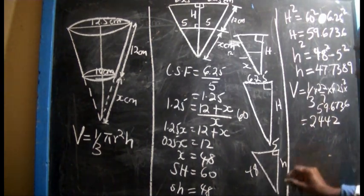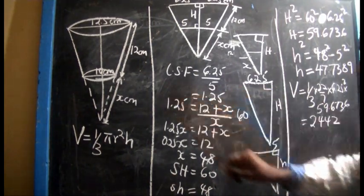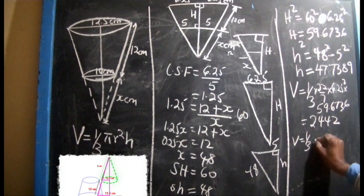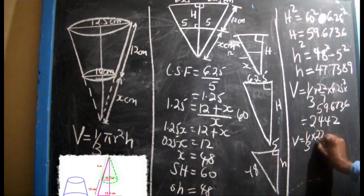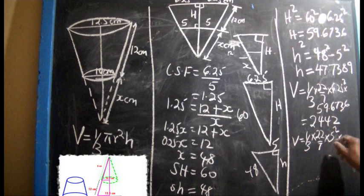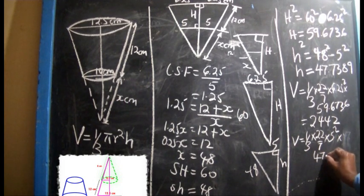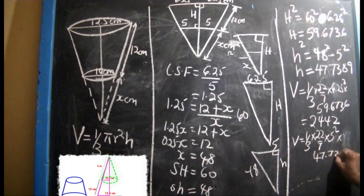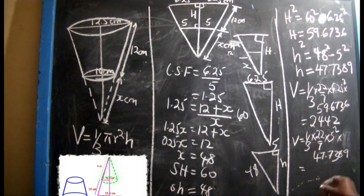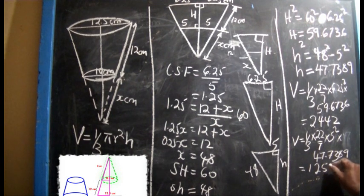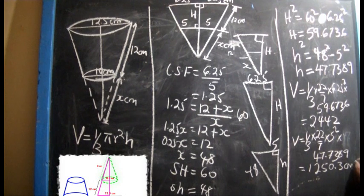Now let's find the volume of the smaller cone using small v. Small v equals one-third times 22 over 7 times 5 squared times 47.7389, which equals 1,250.3 cubic centimeters.